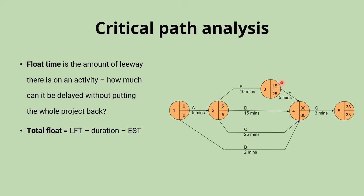Another way of looking at that: if we can start activity F after 15 minutes and it takes five minutes to complete, that brings us to 20 minutes — we still have 10 minutes before the 30-minute deadline to start activity G and remain on schedule. For activity B (making toast), LFT is 30 minutes, minus duration of two minutes, minus earliest start time of zero — giving a total float of 28 minutes.